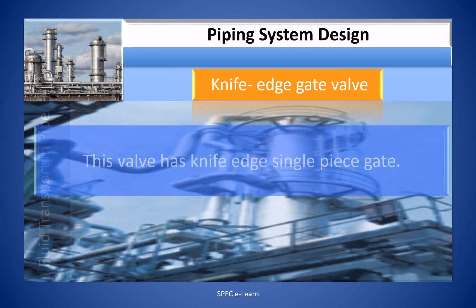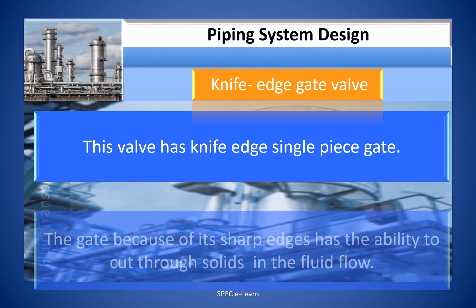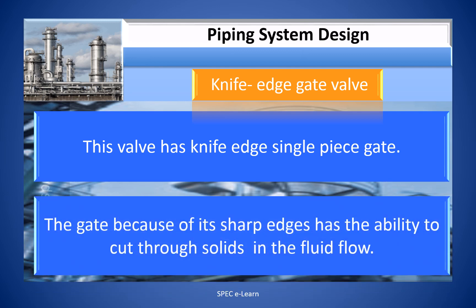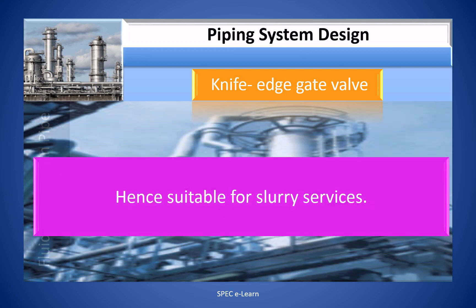The knife edge gate valve has a knife-edge single-piece gate. The gate, because of its sharp edges, has the ability to cut through solids in the fluid flow. Hence, it is suitable for slurry services.